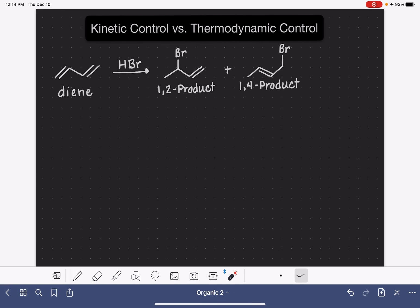Dienes undergo electrophilic addition reactions in which a molecule of HBr or HCl or Br2 is added to the diene molecule. This forms two different types of products.